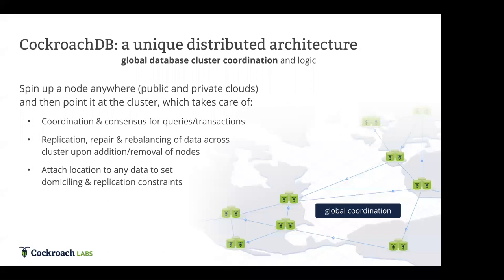It's a pretty simple architecture. Spin up a node anywhere — it could be public cloud, private cloud, on Kubernetes — whatever, pointed at the cluster. As long as we have some sort of public IP, it's going to speak TLS and we'll have coordination across all the various different nodes. While you're running Kubernetes in each data center, the database itself is taking care of coordination and consensus of queries and transactions across broadly distributed geographies. Each node in a CockroachDB cluster can take a request and access the rest of the data — it's truly phenomenal. Through global coordination, we can implement serializable isolation at scale.